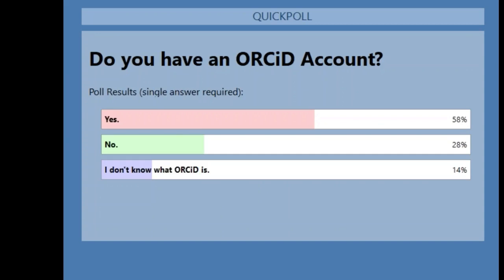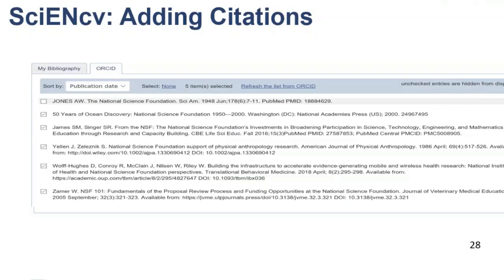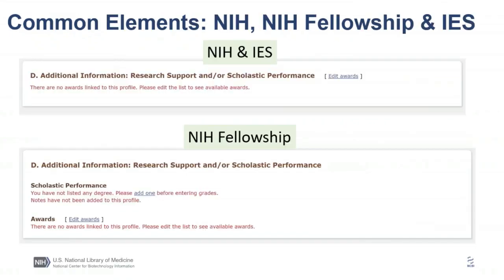It looks like the majority of you do use ORCID. For those not familiar with ORCID, it's a nonprofit organization that provides a unique identifier to distinguish you from other researchers — you typically put this on publications, but can also use it for patent products. Moving on, Section D for NIH and IES is where you associate your awards with biosketches. For NSF users, you will use a completely different form also part of ScienceTV — Current and Pending Support — where you add awards and in-kind contributions.